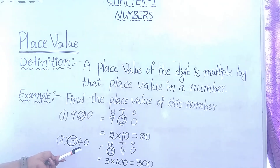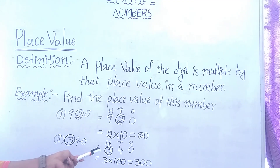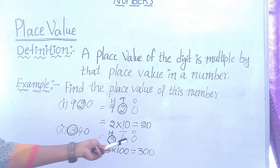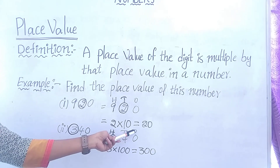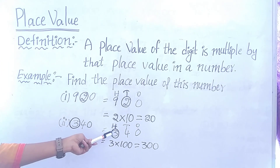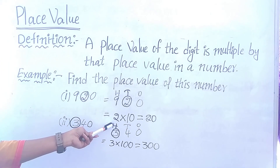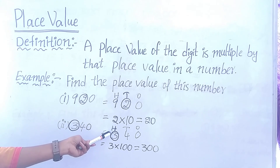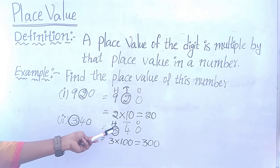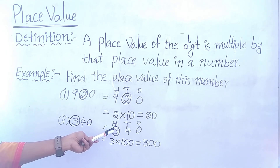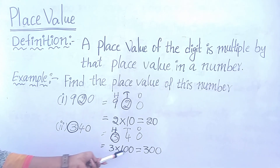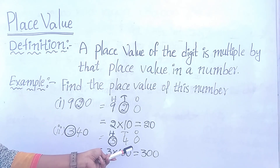Another example: 3, 4, 0. Find the place values of this number: 0 in 1's place, 4 in 10's place, 3 in 100's place. In this example, which number is circled? 3. In which place? 3 is in 100's place. So 3 into 100 equals 300.